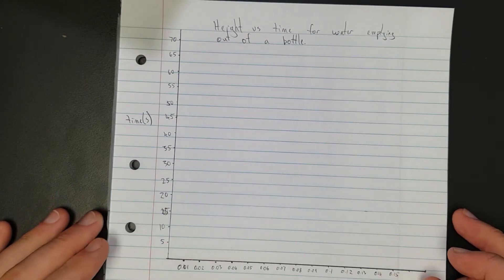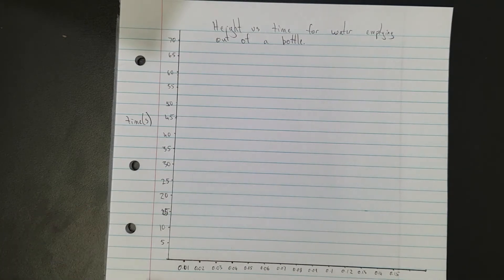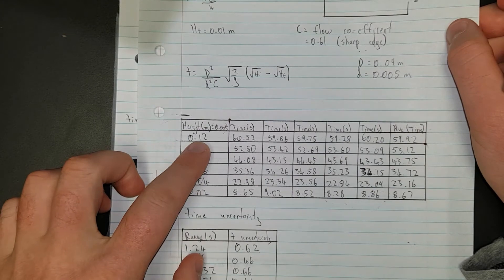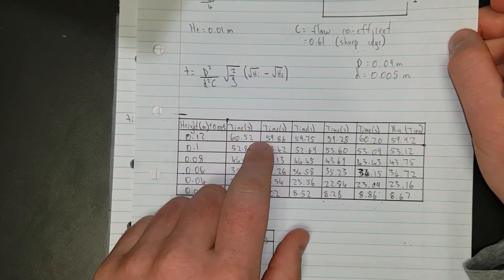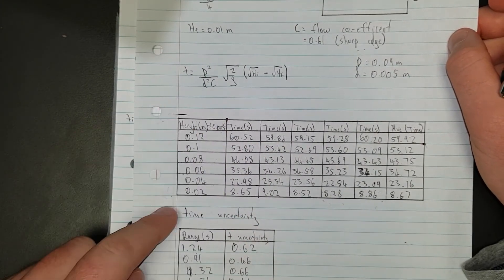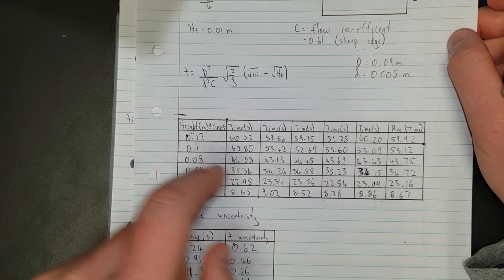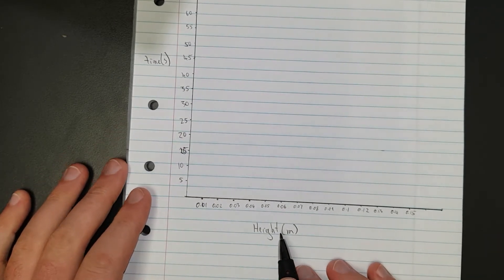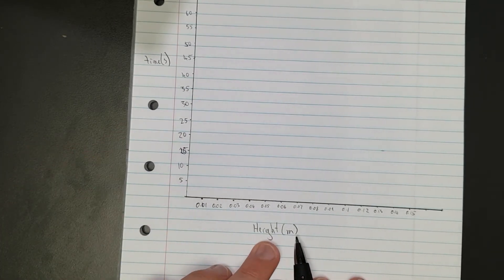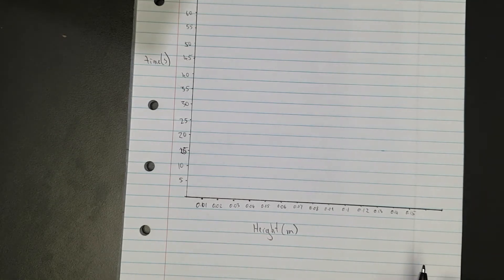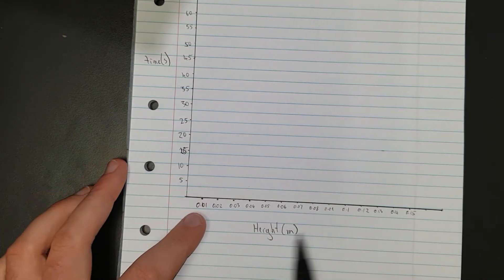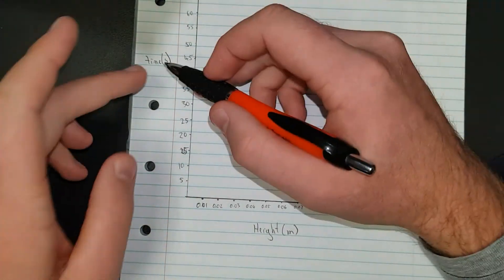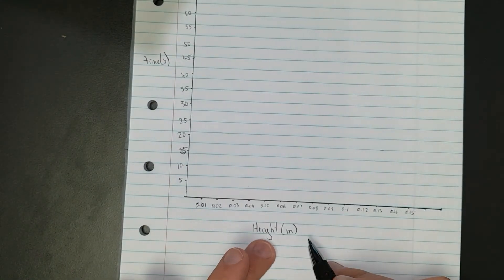Here's the graph I've started to draw. Your independent variable - the height - goes on the x-axis, and time is the dependent variable on the y-axis because time depends on the height. You can change the height and that'll change the time, but you can't change the time to change the height. The independent variable always goes on the x-axis, and the dependent variable goes on the y.